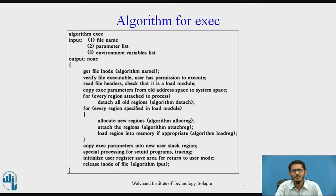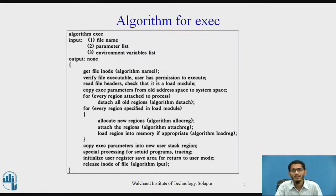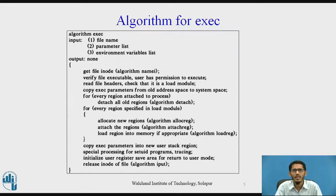It first accesses the file via the algorithm namei to determine if it is an executable regular (non-directory) file and to determine if the user has permission to execute the program. The kernel then reads the file header to determine the layout of the executable file, reads the file headers, and checks that it is a load module. It then copies the exec parameters from the old address space to the system space.